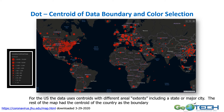This is a dot centroid map showing issues with data boundary and color selection. It shows two things: one is the centroid of the country, especially in Europe, Africa, and South America. But in the United States, it's not the country that's used as a centroid but cities and counties. So it's actually mixing two types of boundaries within the same representation.